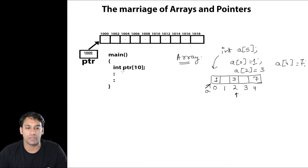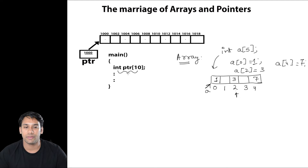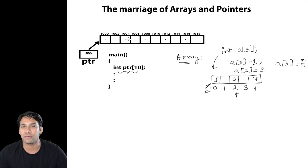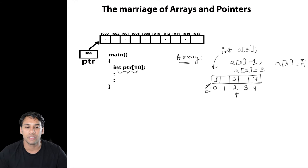For example, we have this program: int ptr[10]. Here I am declaring an array of type integer. Most students confuse that ptr is the name of this array, but ptr is not the name of this array. ptr is a pointer which is pointing to the base address — the starting address — of the continuous memory locations given to this array. So when I say ptr[10], ptr is pointing to the base address of this array.